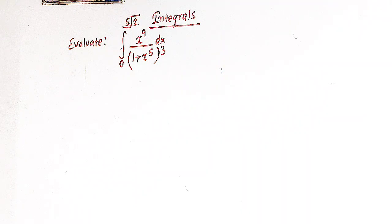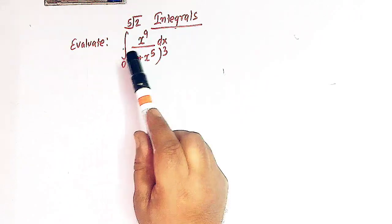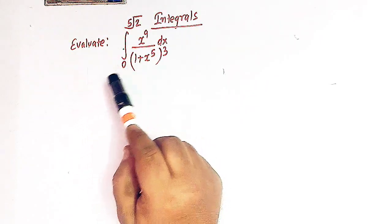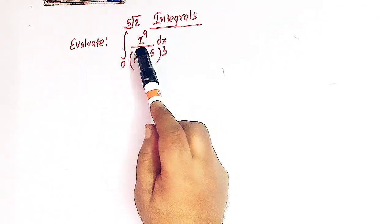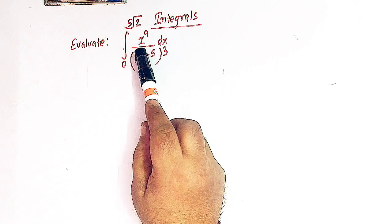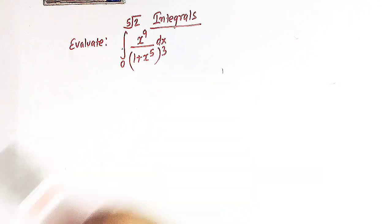Hello viewers. In today's class we are going to discuss one important problem from definite integrals using the concept of integration by substitution method. So here we have a very important problem in which we have to evaluate this integral from 0 to the fifth root of 2, and the integrand is x raised to 9 divided by 1 plus x raised to 5, cubed. So let us start.